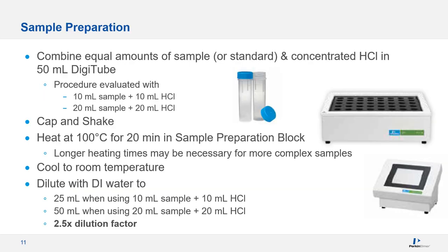For sample preparation, we combined equal amounts of sample or standard with an equal volume of hydrochloric acid in a 50 mL digi tube. We evaluated two volumes: 10 mL of sample with 10 mL HCl, and 20 mL sample with 20 mL HCl. Both gave equivalent results. After combining sample and HCl, we capped the digi tube, shook it, placed it in the sample preparation block, and heated at 100°C for 20 minutes while still capped. For higher dissolved solids, a longer heating time may be necessary, but for drinking water, 20 minutes was sufficient.